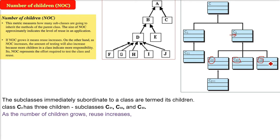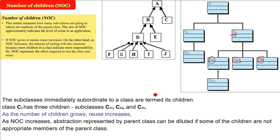As the number of children will grow, of course the reuse will increase. But as the number of children will increase and if you have an abstract class, if a parent class is abstract class, the abstraction of phenomena will be diluted if some of the children are not appropriate members of the parent class. So we need a proper balance of this number of children. Because though the reuse is increasing, the appropriate implementation should be there. As the number of children will increase, the amount of testing will also increase.